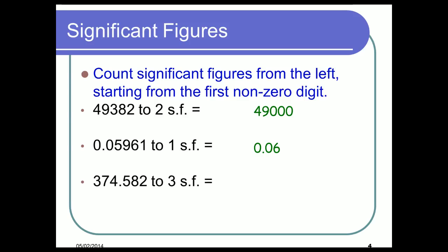What about 374.582 to three significant figures? The first non-zero digit is three, then seven, then four — so three significant figures gives us our rounding point there. We draw our line in, look at four and five, round to the nearest ten, and we'd get 50. So our answer would be 375. It's not 375.0 because that would be four significant figures. If we can represent it as a whole number without a decimal, we will.